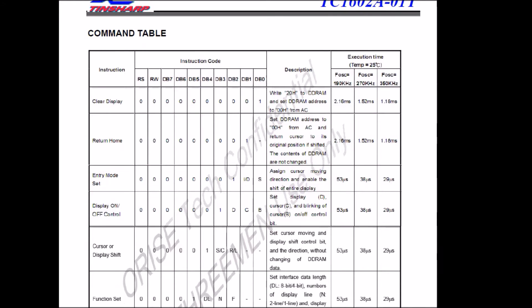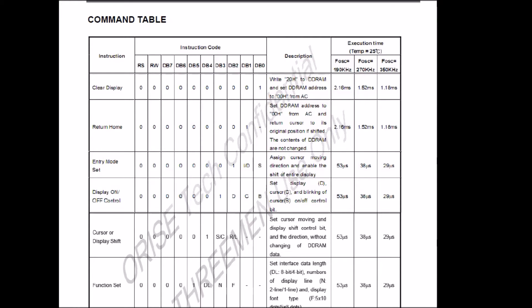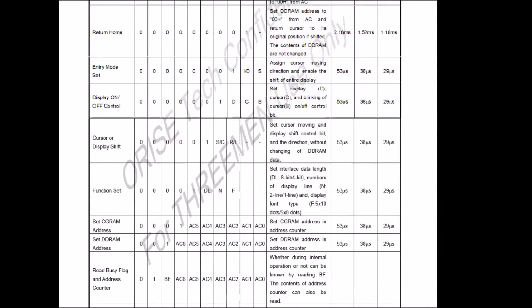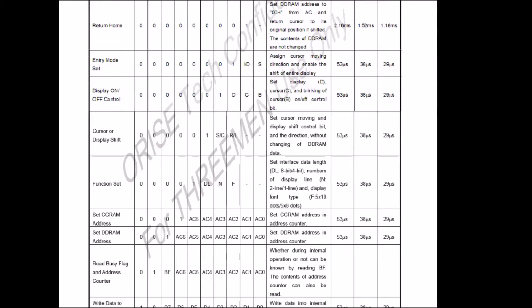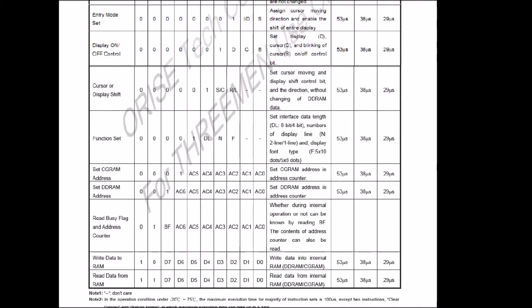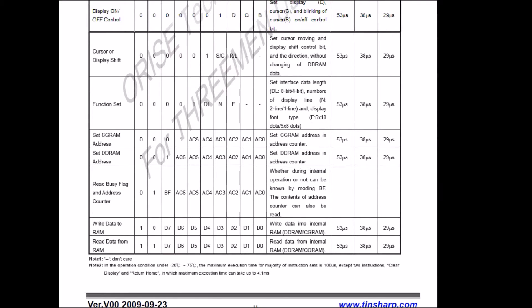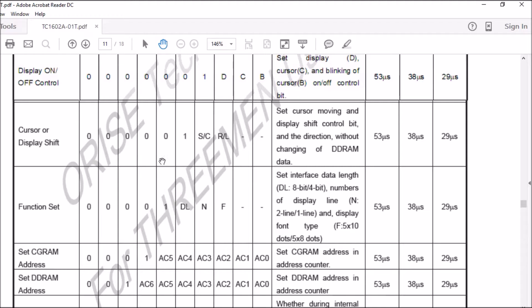This is the command table. When you start your program, you should first clear the display. There are instructions for returning home, entry mode set, display on/off control, cursor or display shift, and function set. Then CGRAM — character generator RAM address — and DDRAM address, which is display data RAM. Then read busy flag and address counter, write data to RAM, and read data from RAM. We will discuss the use of the command table when we start our program.